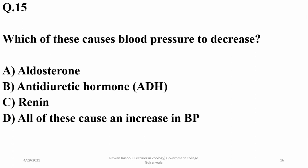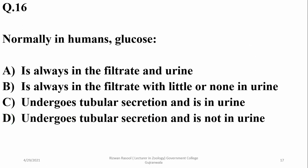Which of these causes blood pressure to decrease? All of the listed options are involved in increasing blood pressure, so delta — including anti-diuretic hormone as well as aldosterone — is the answer.